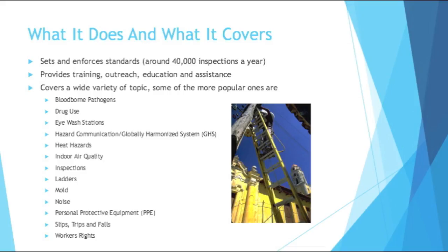Some of the topics that you can find in the regulations are bloodborne pathogens, drug use, eyewash stations, hazard communications, globally harmonized system, heat hazards, indoor air quality, inspections, ladders, mold, noise, personal protective equipment, slips, trips and falls, and workers' rights. These are just a few of hundreds of topics that OSHA goes very deep and complex with, with all sorts of rules and regulations to keep people safe.